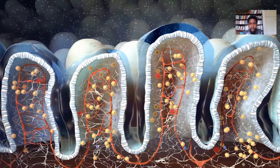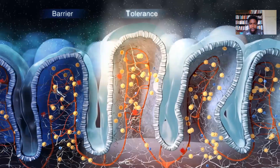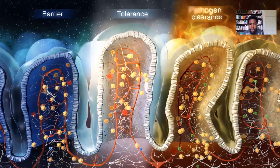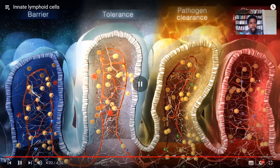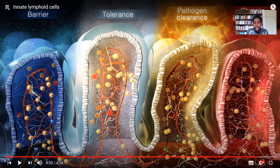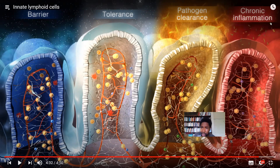ILCs participate in various aspects of immunity — from maintenance of the epithelial barrier and tolerance against commensals, to immune responses against parasites and pathology associated with chronic inflammation. It's safe to say that most people have some degree of this chronic inflammation situation going on.